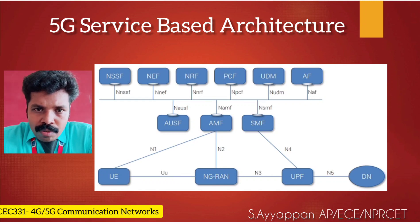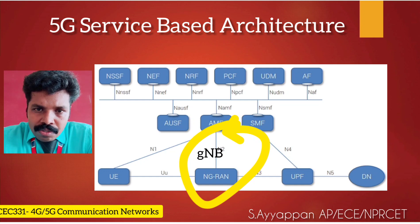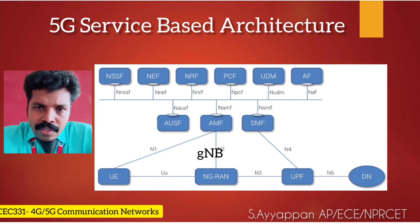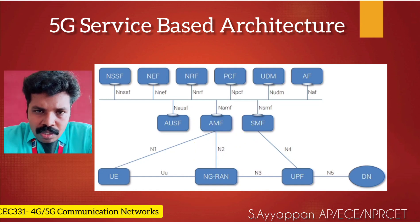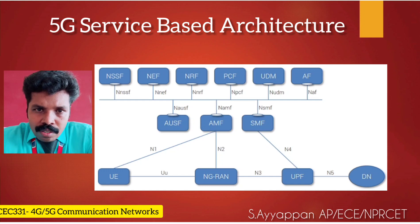We are going to talk about gNodeB, or Next Generation Node B. The Next Generation Node B, or gNodeB, is one of the components of the 5G radio network. It communicates with UE (user equipment) on the radio side of the transmission end and provides connectivity towards the core network.